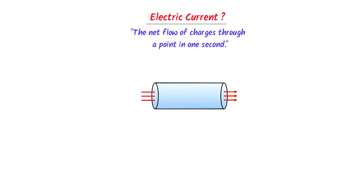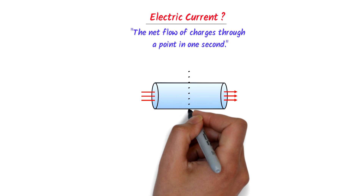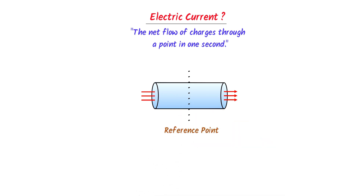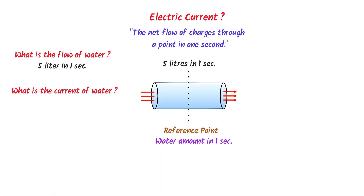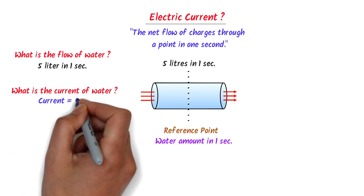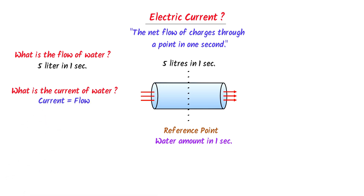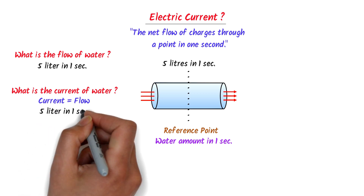For example, consider a water pipe. Let me select a reference point. I am interested in calculating the amount of water passed through this point. Let 5 liters of water pass through this point in one second. What is the flow of water? The flow of water is 5 liters per second. Similarly, what is the current of water? Remember that current also means flow of something. So the current of water is again 5 liters per second.